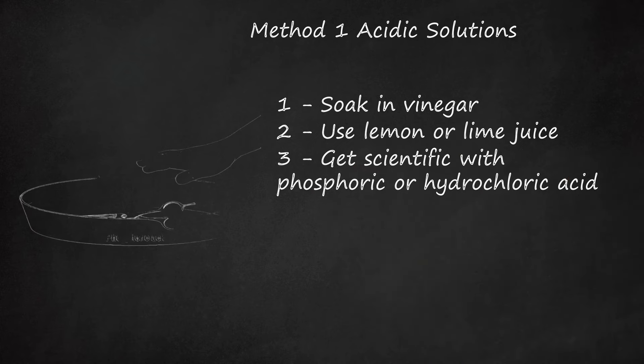Third, get scientific with phosphoric or hydrochloric acid. Phosphoric and hydrochloric acids are common household items that are inexpensive and work well on rust. Phosphoric acid is actually a rust converter in that it turns iron oxide, or rust, into ferric phosphate, a black coating.